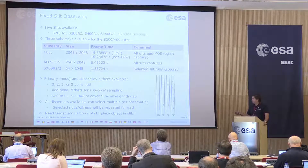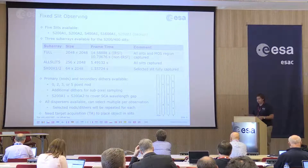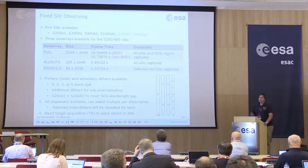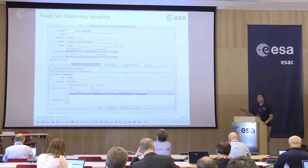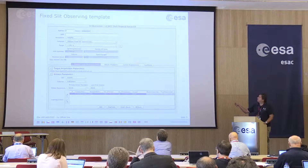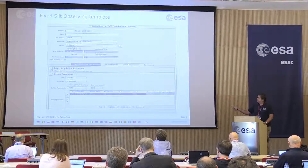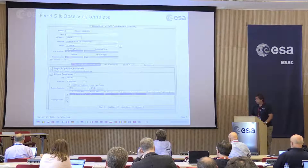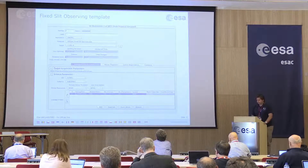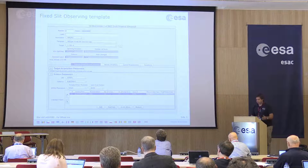All the dispersers are available and you can select multiple or all in your observing template. This is how the current APT template for fixed-slit observing looks: you select NIRSpec, then fixed-slit spectroscopy, give a target, then select a slit, a subarray, dither or nod patterns, and add the spectral configurations you want to observe — you can have many. All the nods, dither patterns, and so on will be repeated for all those gratings or dispersers.